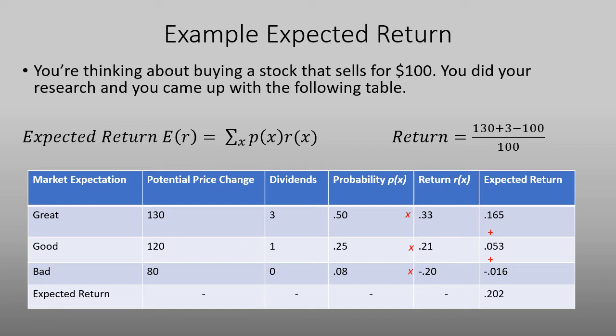Now, following that same process for great, good, and bad, you then would add your expected returns. And for this portfolio, you'll get a total expected return of 0.202.